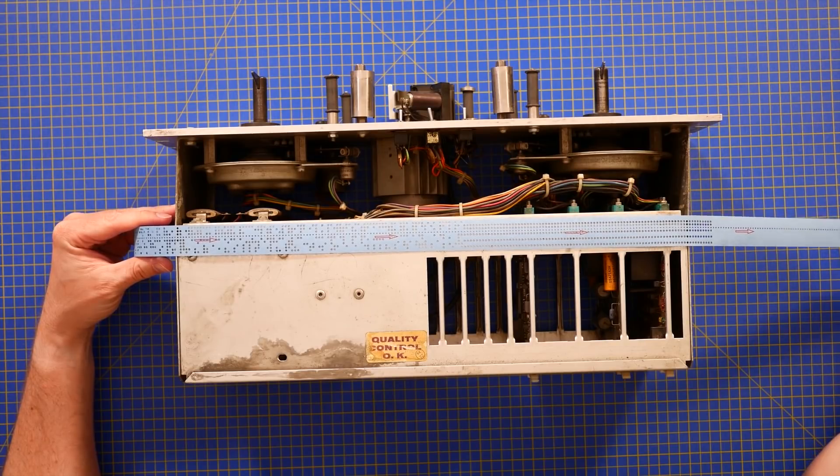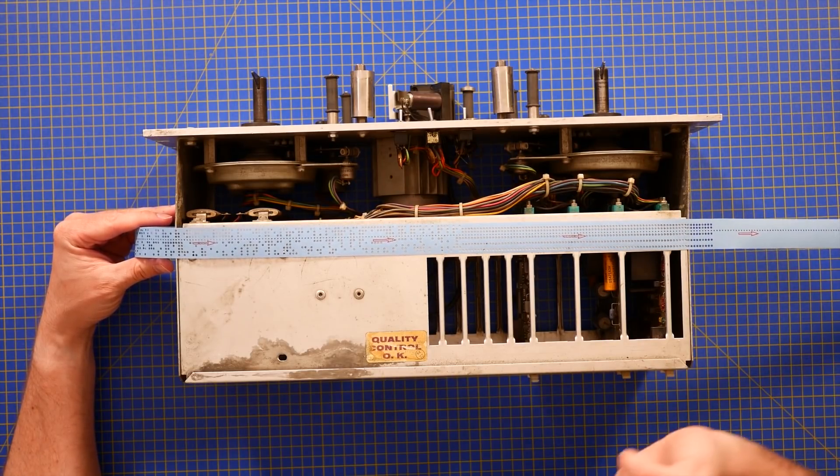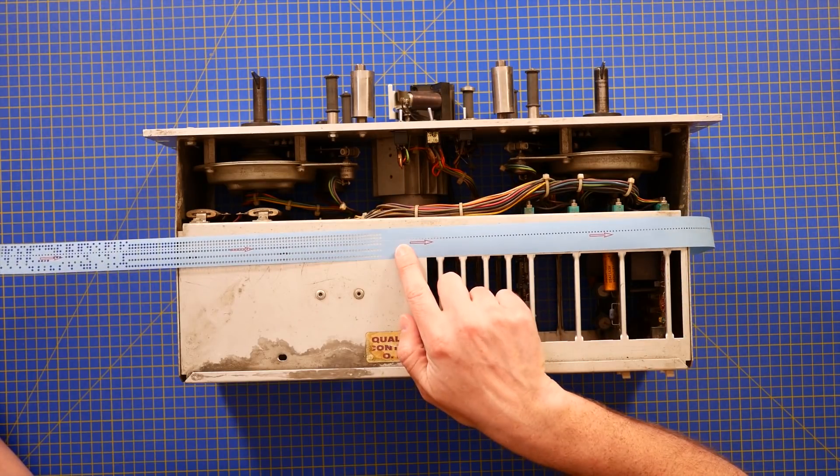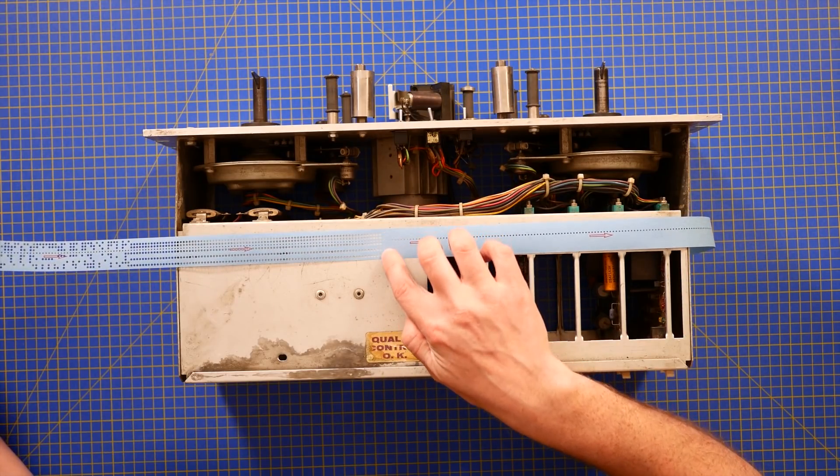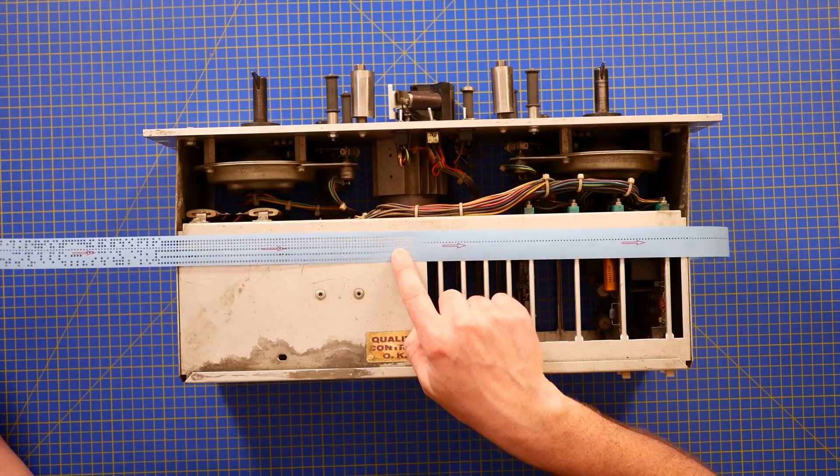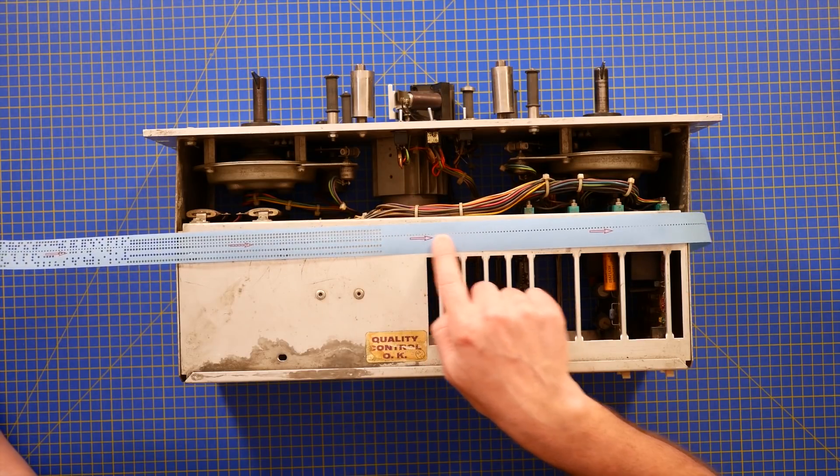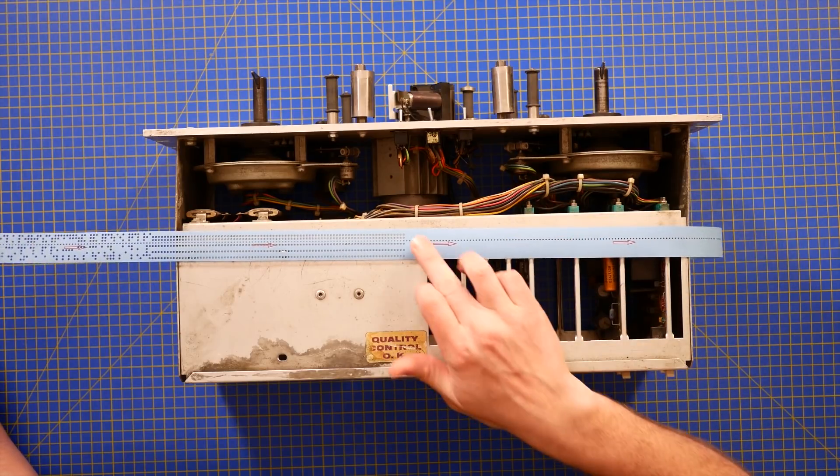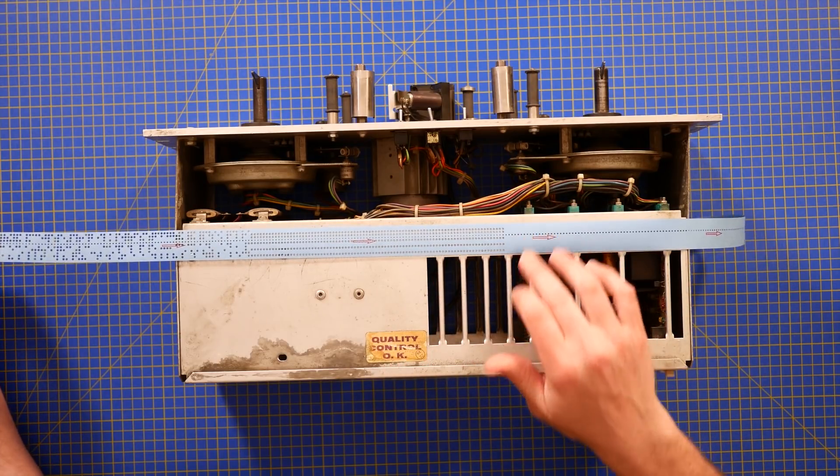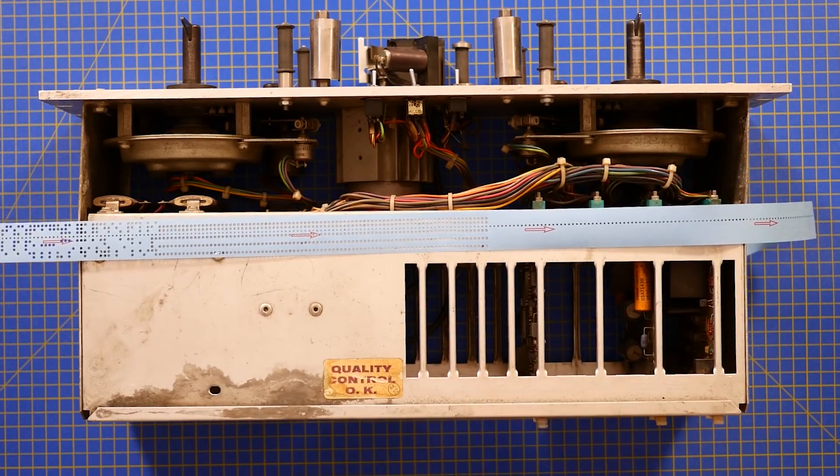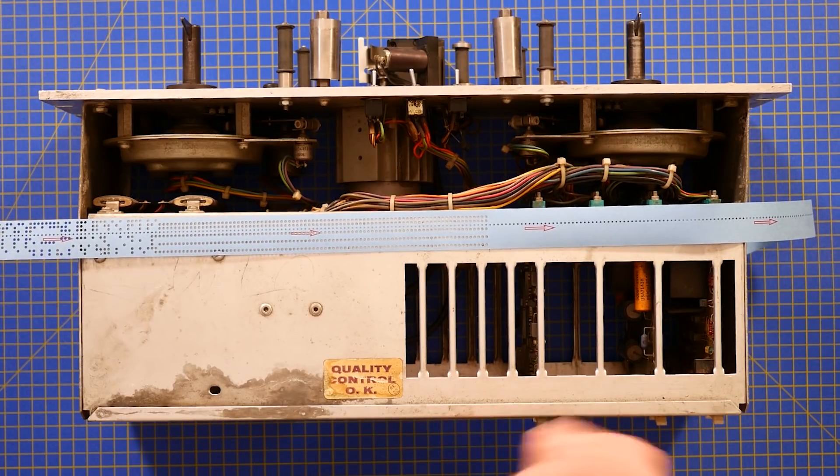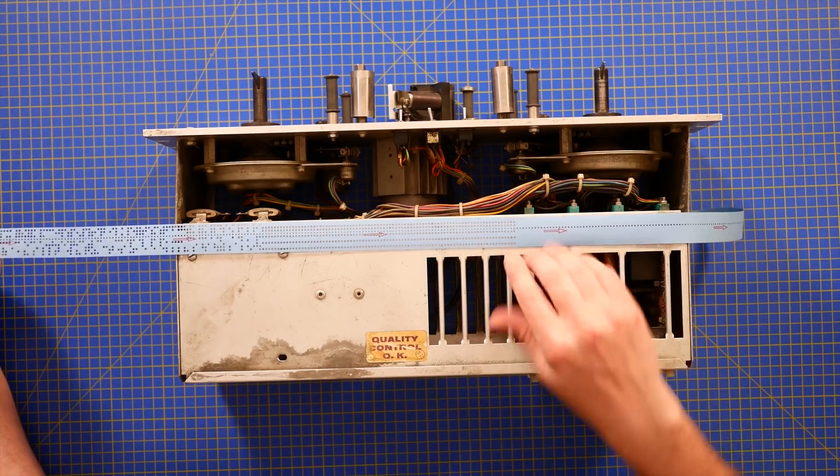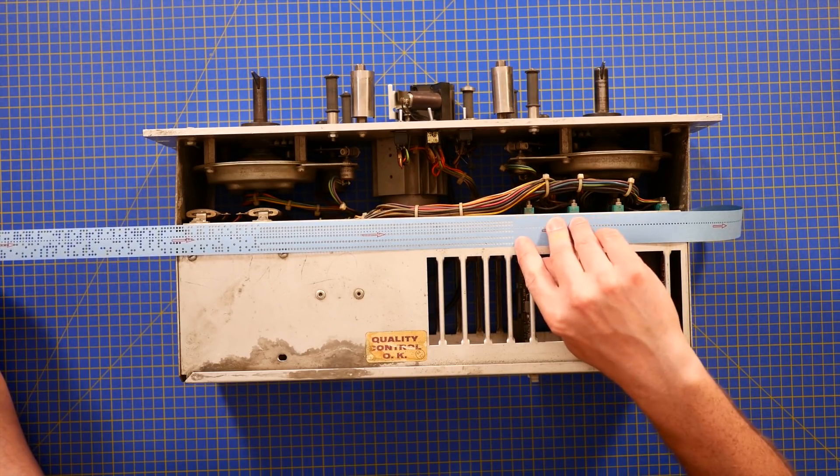Now this is an example of 8-bit tape. You can see on the leader that you've got these small perforations, they're smaller than the rest of the holes for the data. And that is the feed, that's actually gripped by a sprocket on the front of the machine that pulls the tape through at a fixed speed.